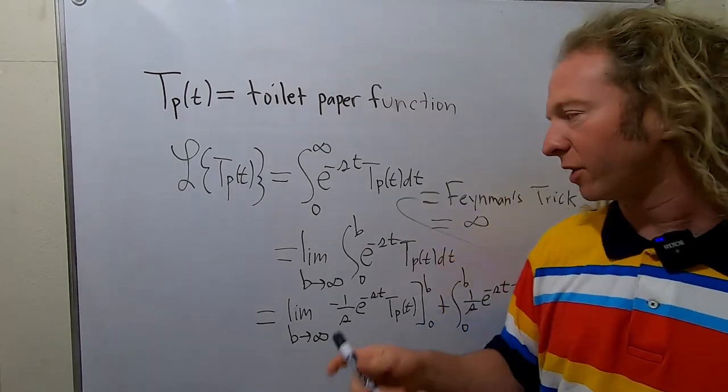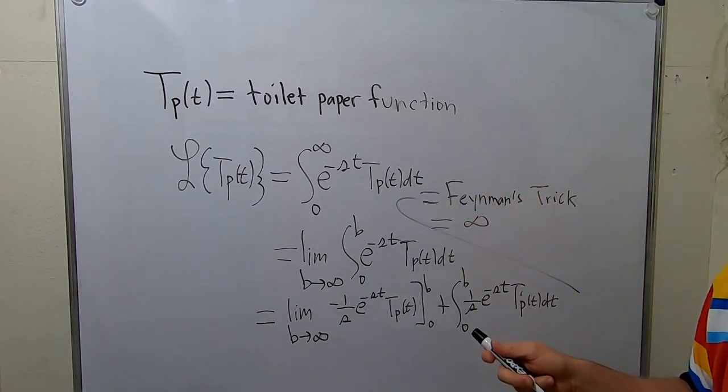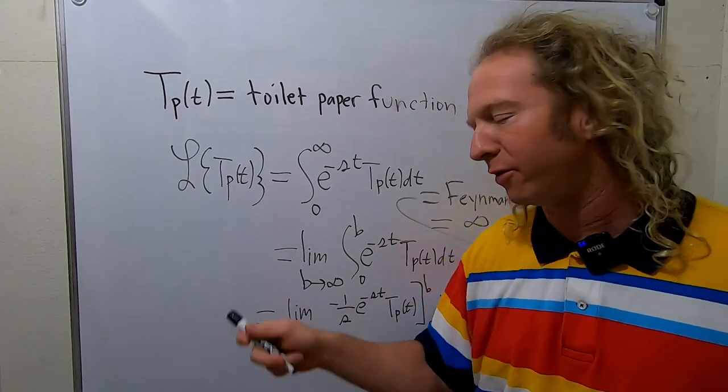Okay, so we use Feynman's trick as you can see here and we got infinity. So what does this mean? It means the Laplace transform of the toilet paper function is equal to infinity.